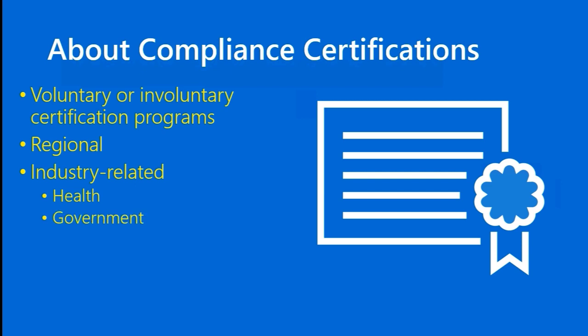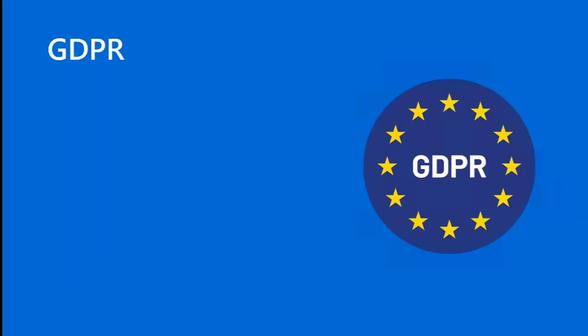Government — here in the U.S., if you want to be a government contractor, you need to bring these certifications to the table before the government will even talk to you. Finance — you're dealing with bank account numbers, credit card numbers, sales figures, all very proprietary and confidential information. Education — you could go on from there. Many industries are subject to involuntary or mandatory compliance certifications. The AZ-900 objectives call out three specific programs.